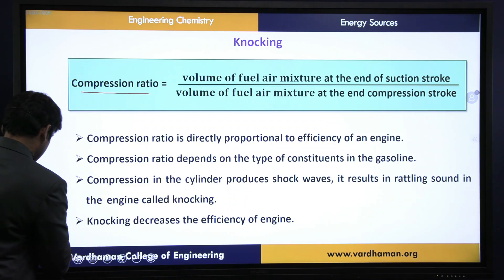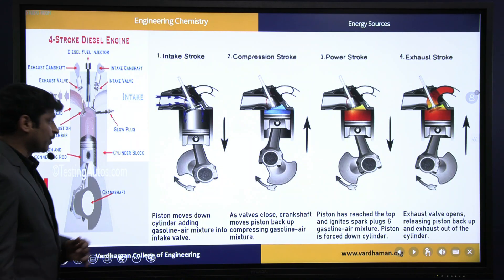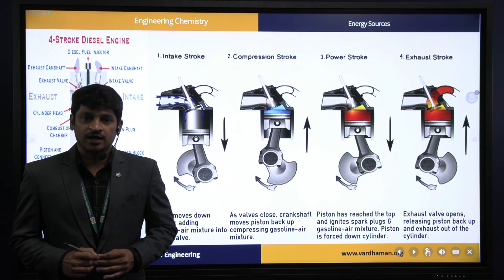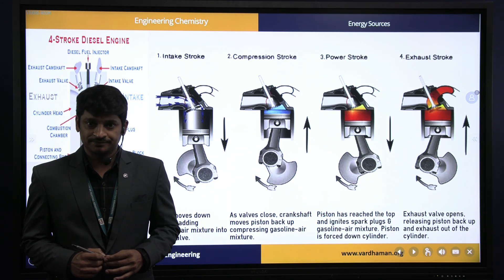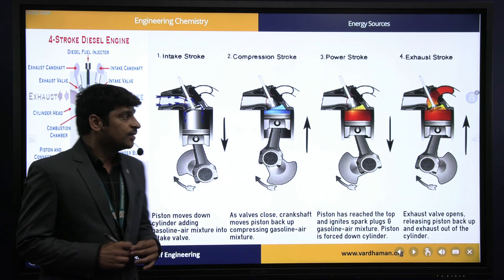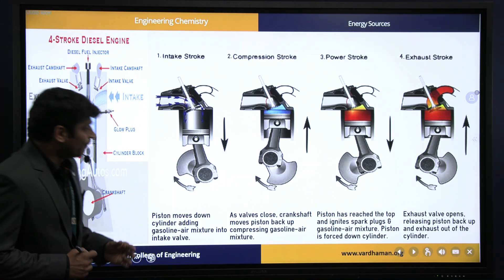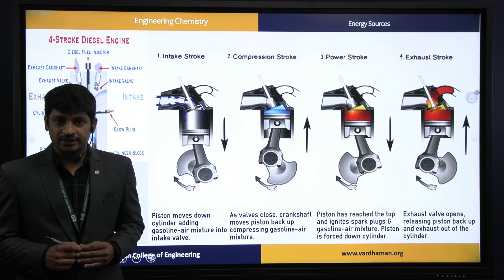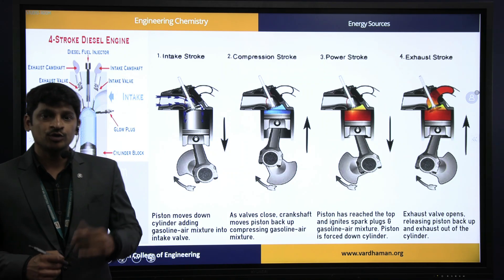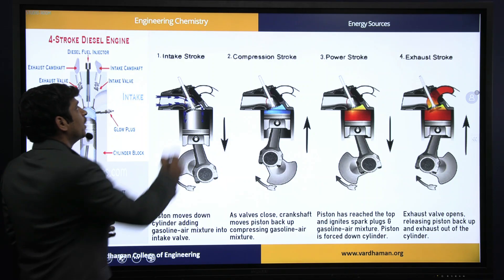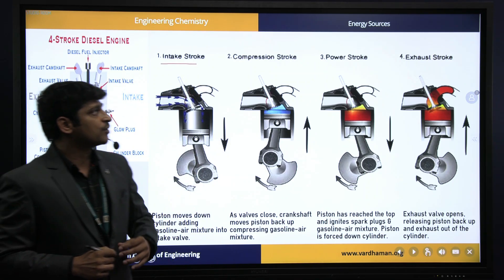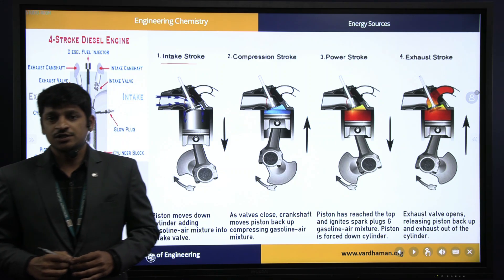Now, coming to what suction stroke and compression stroke are — almost all bikes have four-stroke engine types. These engines are made such that the combustion process occurs in four strokes or steps: the first is the intake stroke, next is the compression stroke, third is the power stroke, and the last is the exhaust stroke.